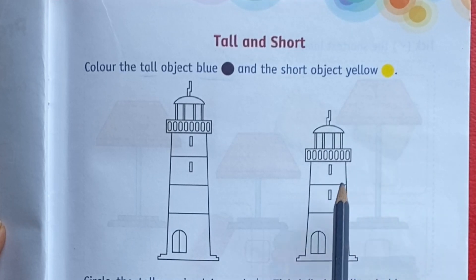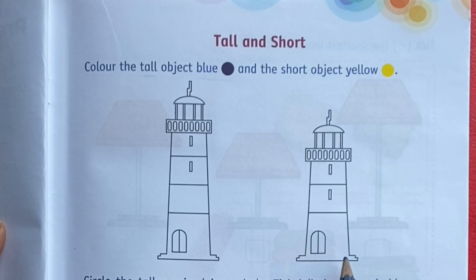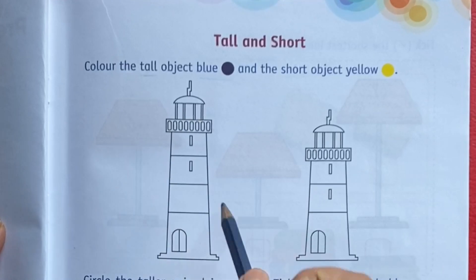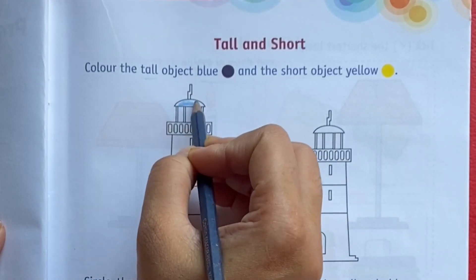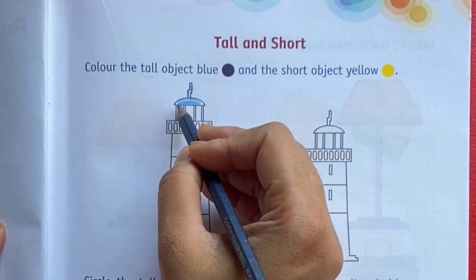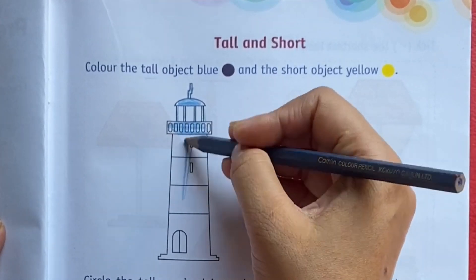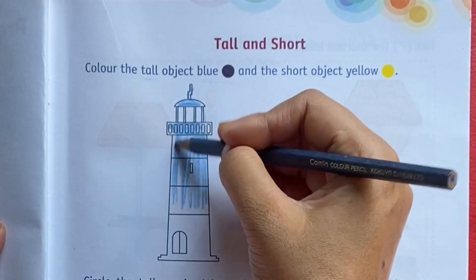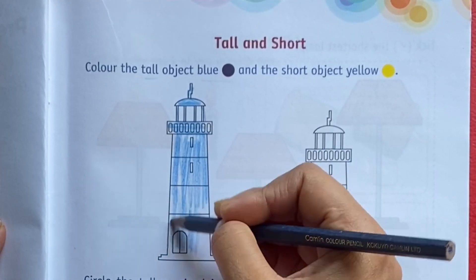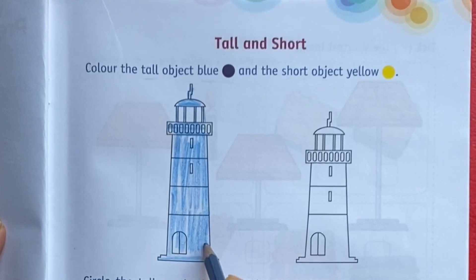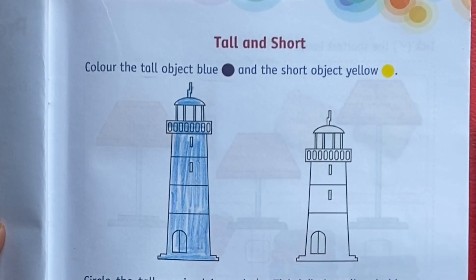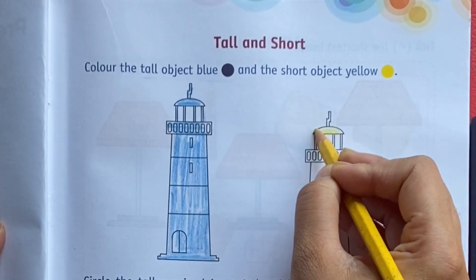Here we can see two lighthouses. Which lighthouse is tall here? The first lighthouse is tall, so colour the tall lighthouse with blue colour. The second lighthouse is short, so colour the short lighthouse with yellow colour.